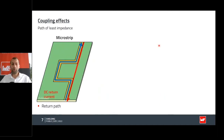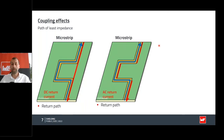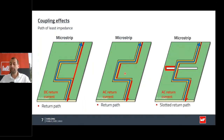In school we learn current always chooses the path of least resistance — this is true, but only for DC current. As soon as you introduce frequency, AC current will go directly under the signal trace, but only if it is able to do so. As soon as you have an opening in your ground plane, current has to find a new way — the path of least impedance — and by doing so, loops occur. Those loops have to be avoided at all costs.